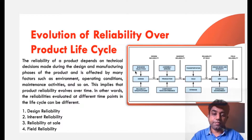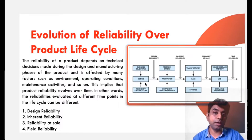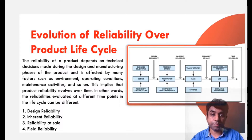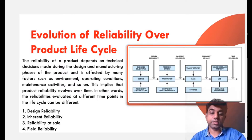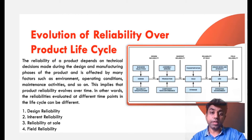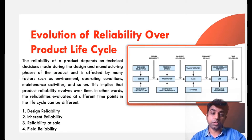We are dividing reliability into four different levels. First, design reliability: during the designing phase, you set a reliability target, for example that the product is reliable up to five years — that is the design reliability. Second, inherent reliability: during production, if changes are made, the reliability of the product changes, so the reliability received after production is called inherent reliability. Third, reliability at sale: when you sell the product, atmospheric conditions and time duration may have changed — for example, if you make the product today but sell it six months later, the reliability factor has changed, so that is called reliability at sale time.